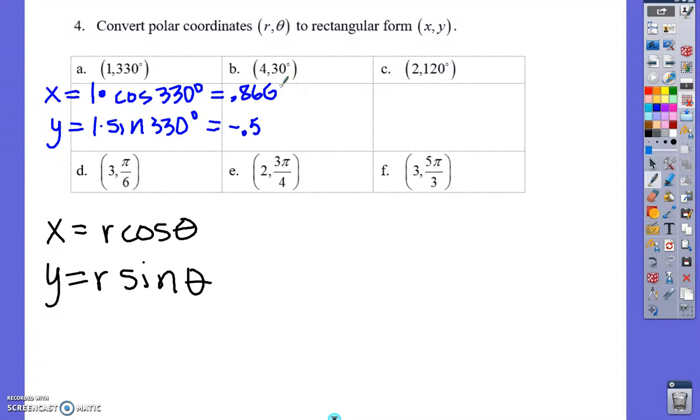By using my calculator, this is equal to the square root of 3 over 2. Of course, this is negative 1/2. And so A becomes radical 3 over 2, negative 1/2.